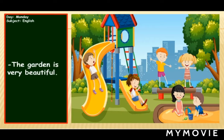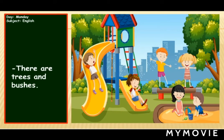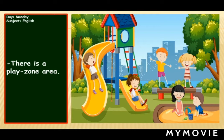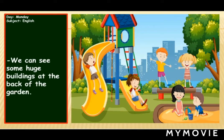Everyone has to watch the picture carefully. As you know, it is a morning scene of the park. Number one, the park is very beautiful because it is neat and tidy — no litter is there on the grass. Number two, there are some trees and bushes as well. Number three, there is a play zone area, as you can see the children are playing over there. Number four, we can see some huge buildings at the back of the park.